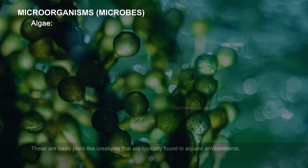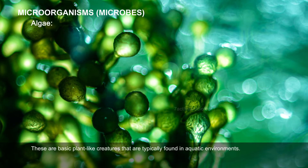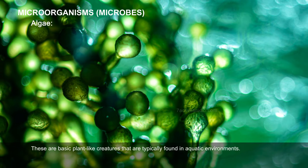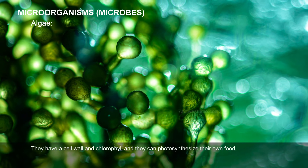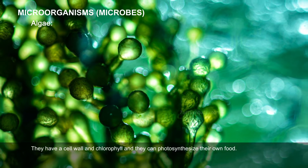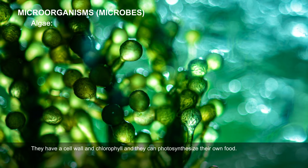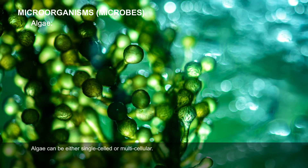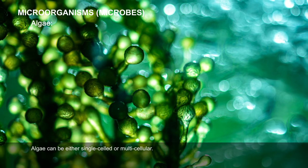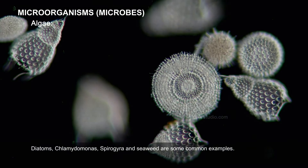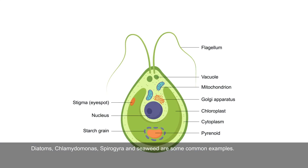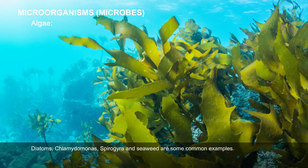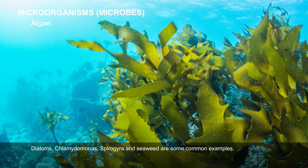Algae. These are basic plant-like creatures typically found in aquatic environments. They have a cell wall and chlorophyll, and they can photosynthesize their own food. Algae can be either single-celled or multicellular. Diatoms, Chlamydomonas, Spirogyra, and seaweed are some common examples.